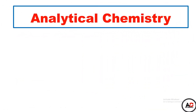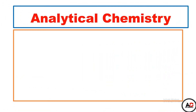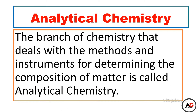Analytical chemistry is the branch of chemistry that deals with the methods and instruments for determining the composition of matter. یعنی analytical chemistry میں ہم instruments اور methods کی help سے matter کی composition کو چیک کرتے ہیں۔ کسی بھی matter کی analysis دو طرح سے کی جاتی ہے۔